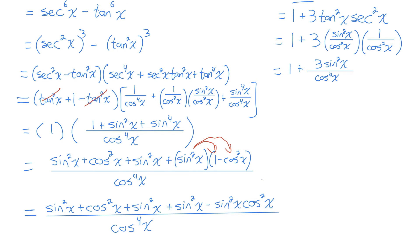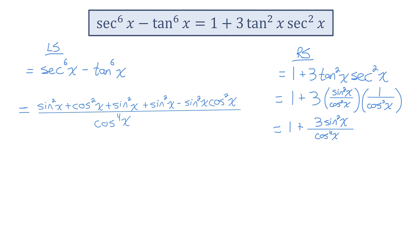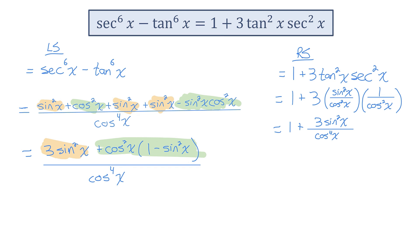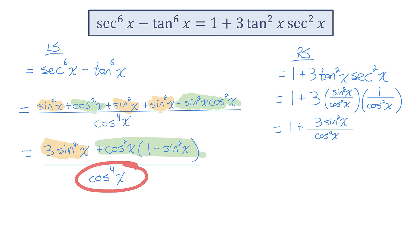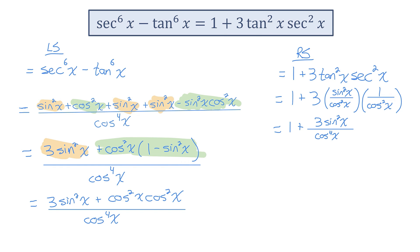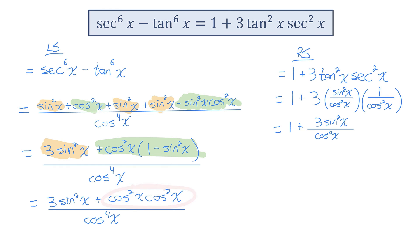Let me expand sine squared x into (1 minus cos squared x) and make room to continue. I'm now going to collect the sine squared terms together — there are three being added, giving me 3 sine squared x. The two remaining terms, highlighted, both contain a cosine squared x factor, so I'll common factor out cosine squared x from both. Now 1 minus sine squared equals cos squared, so cosine squared times cosine squared is cos to the power of 4x. That's divided by cos to the power of 4x, so that quotient equals 1.